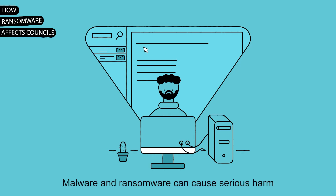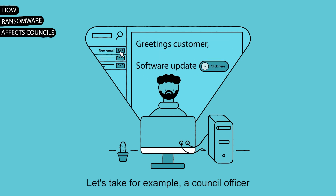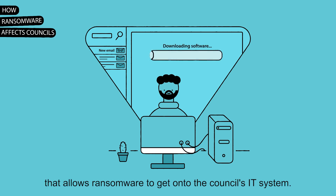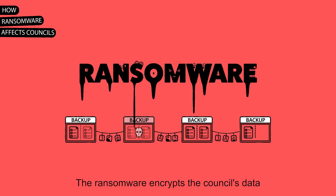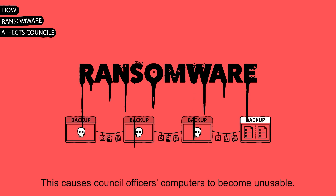Malware and ransomware can cause serious harm to council assets and operations. For example, a council officer who opens a suspicious email attachment that allows ransomware to get onto the council's IT system. The ransomware encrypts the council's data and data backups, rendering them unintelligible, and causing council officers' computers to become unusable.